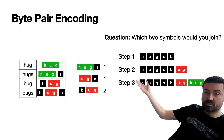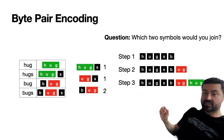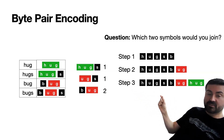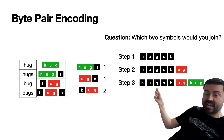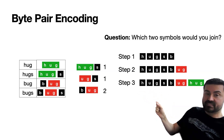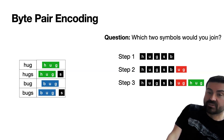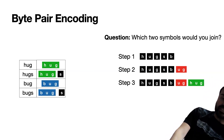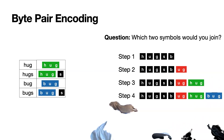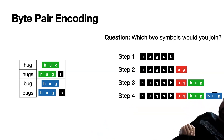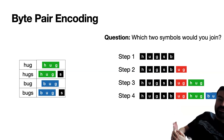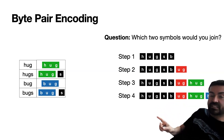Let's do it one last time. Of the existing tokens, which two appear together most often? It turns out that B and UG appear twice, and the rest of pairs appear once or zero times. So we're going to join B and UG into BUG. Now we have a new list: the original five letters, plus UG, HUG, and BUG. Let's say we stop right there — we now have some pretty good tokens that split the words pretty well.